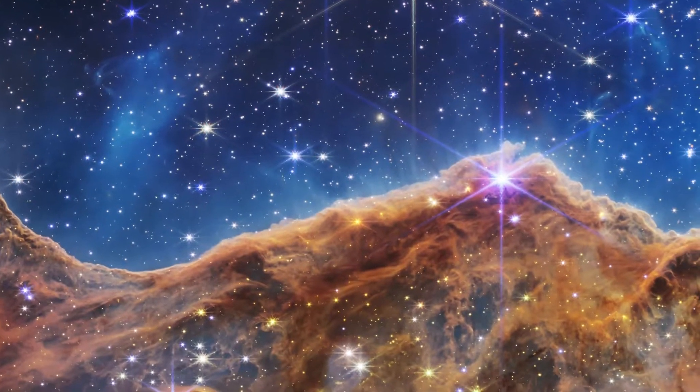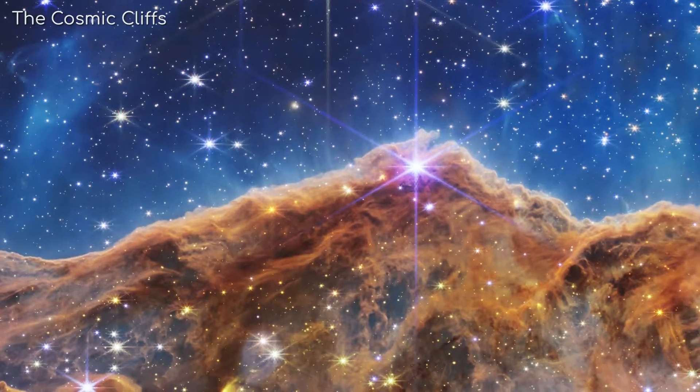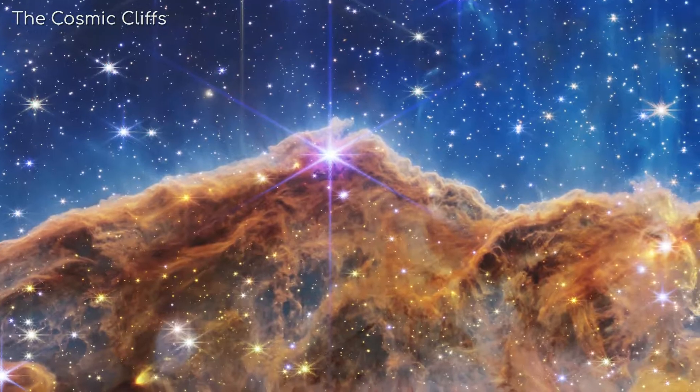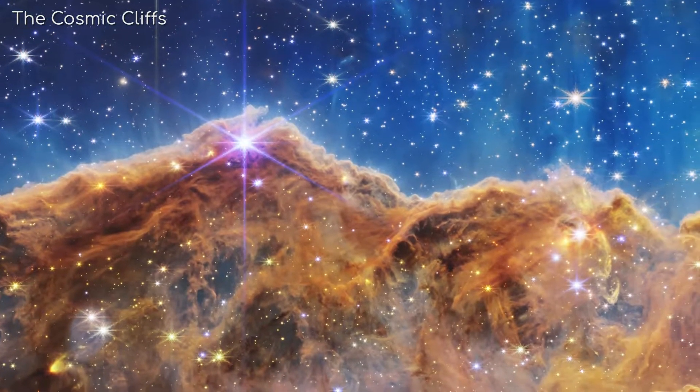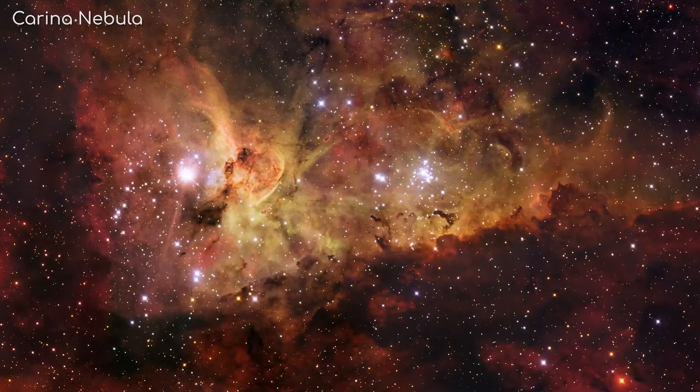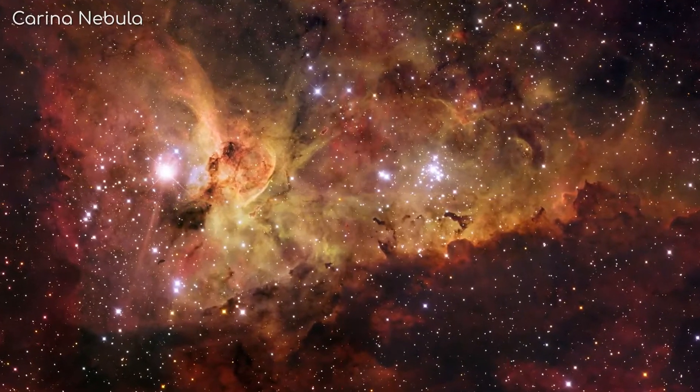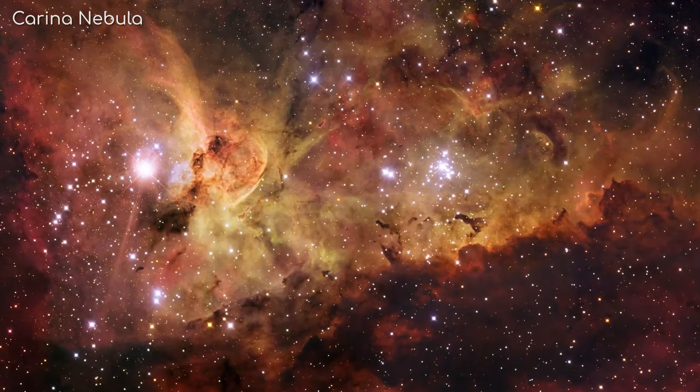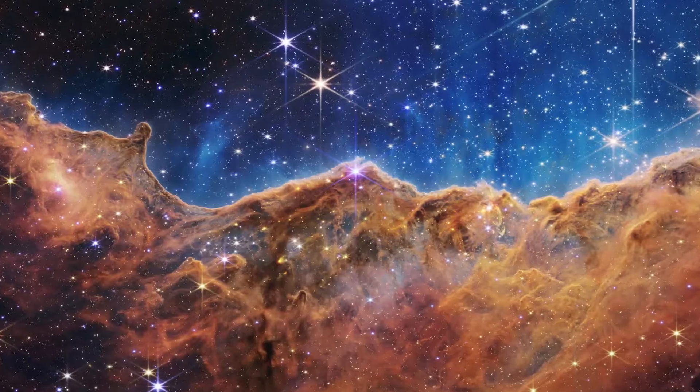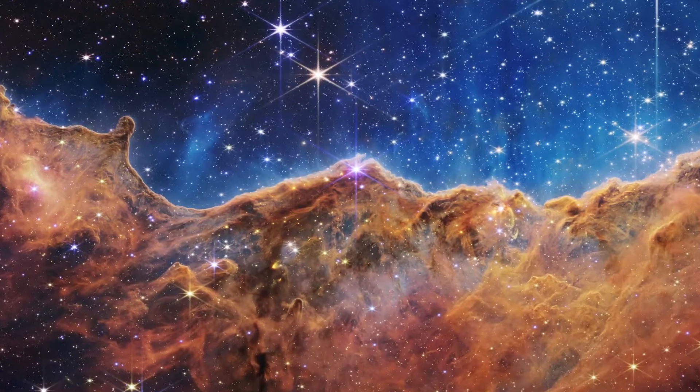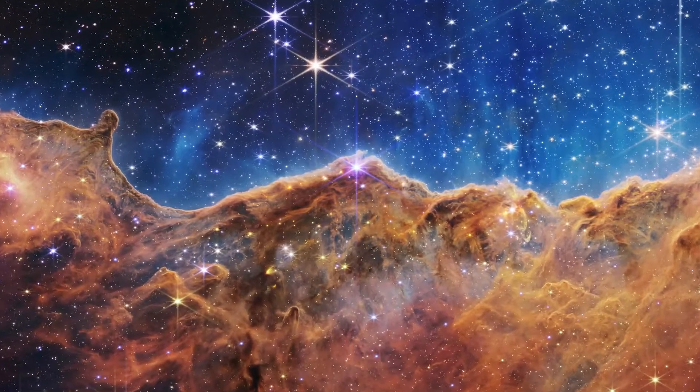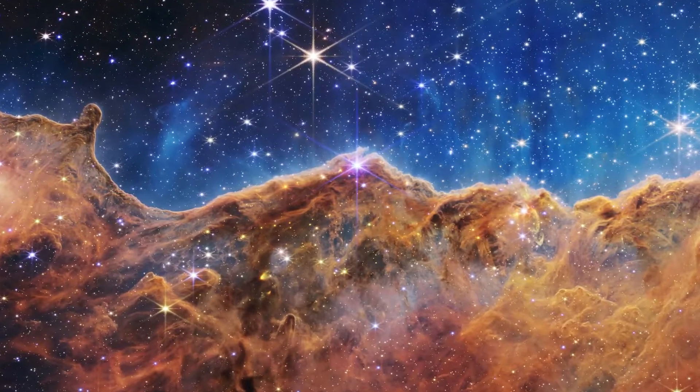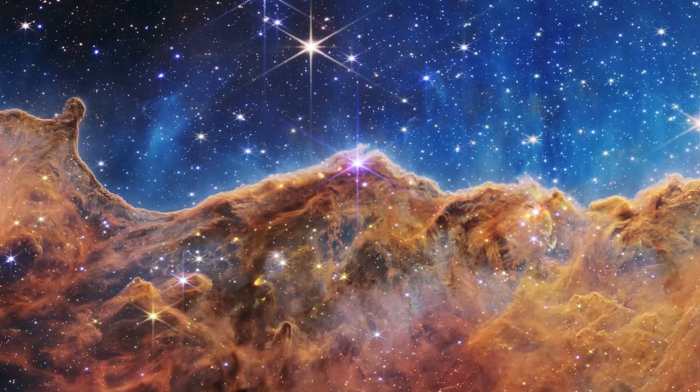The first stop on our journey is a place known as the Cosmic Cliffs. The Cosmic Cliffs, otherwise known as NGC 3324, are part of the Carina Nebula, about 7600 light years away from us. These peaks you are looking at are massive structures, around 7 light years high, and what you see here is only a portion of the nebula as a whole.